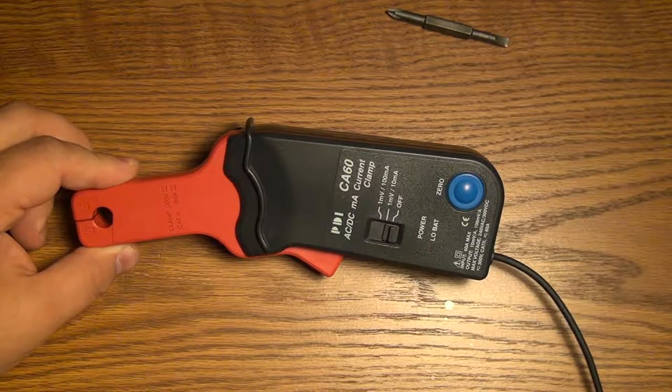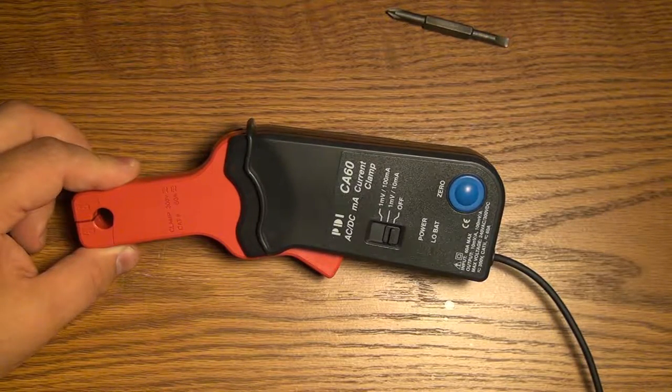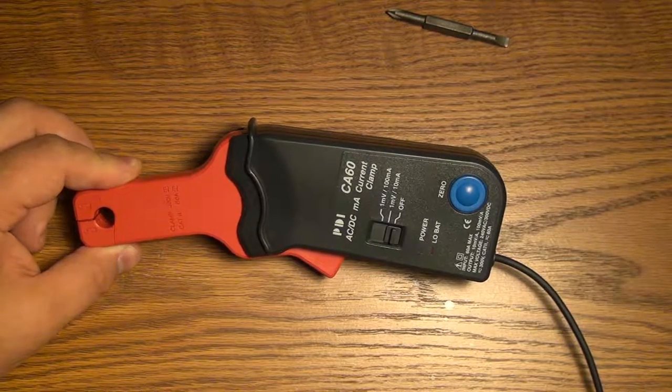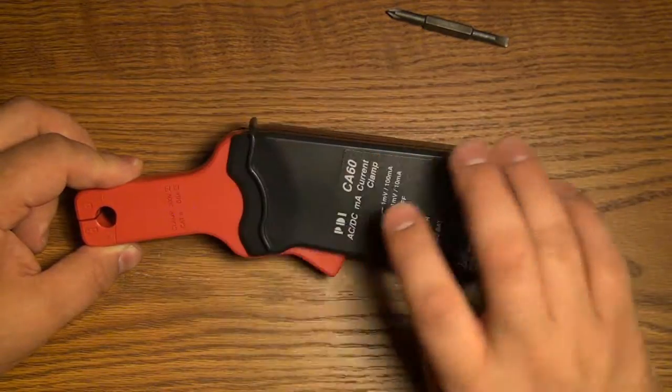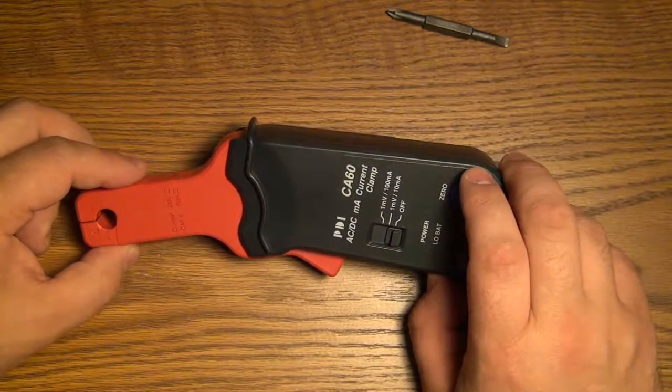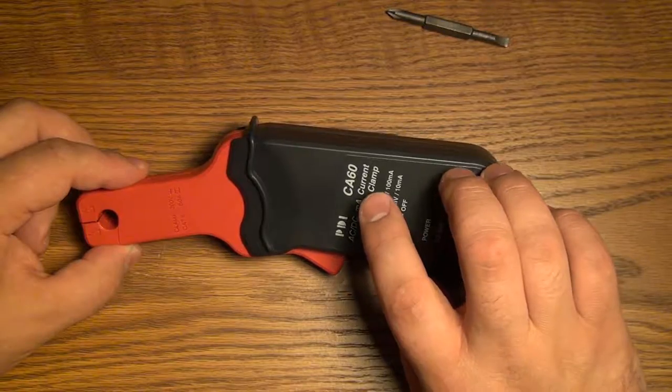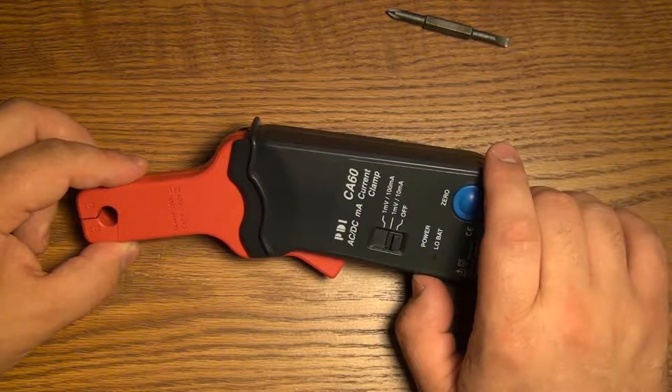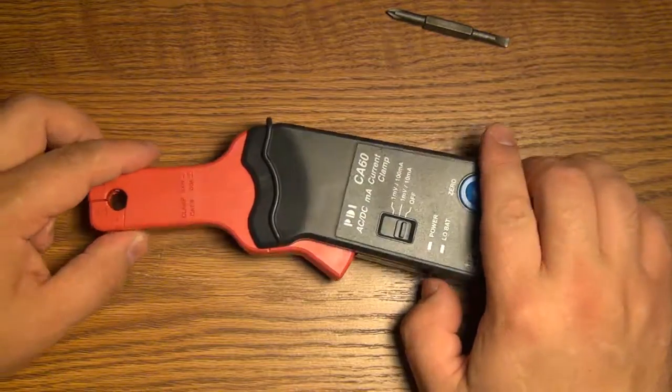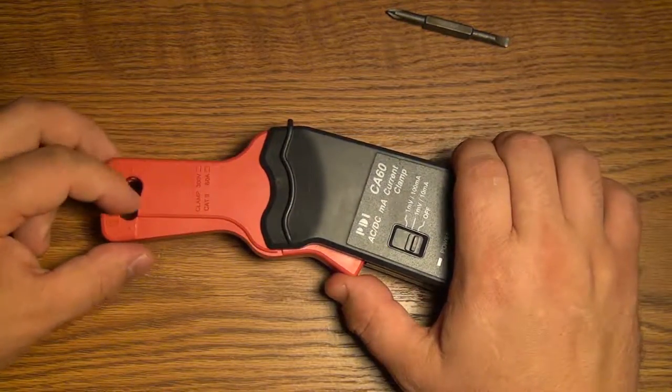Thank you for watching. This has been kind of a lumped together episode of looking at burden voltage and how these clamp-on amp meters work, and a little teardown of the CA-60 clamp-on meter by PDI, and a little explanation of how these type of clamp-on meters work.